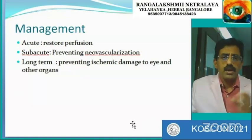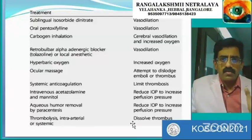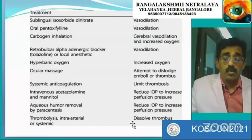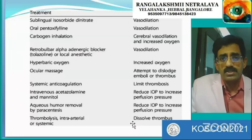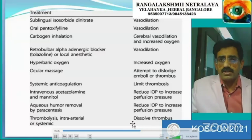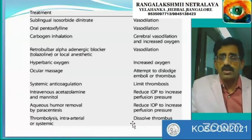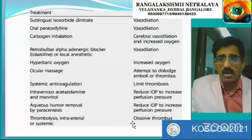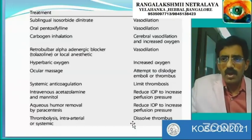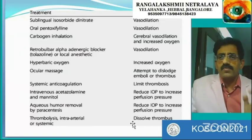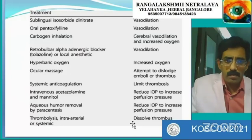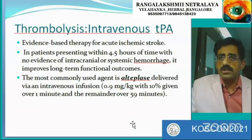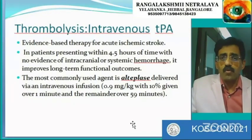Management aims to restore perfusion in acute cases, prevent neovascularization in subacute cases, and prevent ischemic damage long term. Conventional management includes vasodilation through paper bag breathing — very important for early presentations — carbogen inhalation for cerebral vasodilation and increased oxygenation, ocular massage to dislodge the embolus, systemic anticoagulation, intravenous acetazolamide and mannitol, and aqueous humor paracentesis to reduce IOP and increase perfusion pressure. These have shown little difference in outcome in patients presenting beyond six to nine hours.